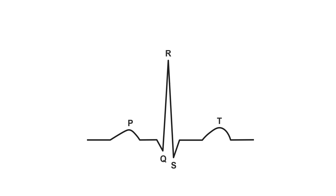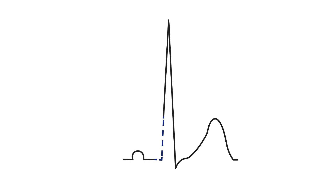Also, what we look for at the start of the recording is whether the waves and intervals have normal durations. Is the PR interval normal? Are the QRS duration and the QT interval normal? Are there any baseline abnormalities evident, such as the delta wave and a short PR interval of Wolff-Parkinson-White syndrome?